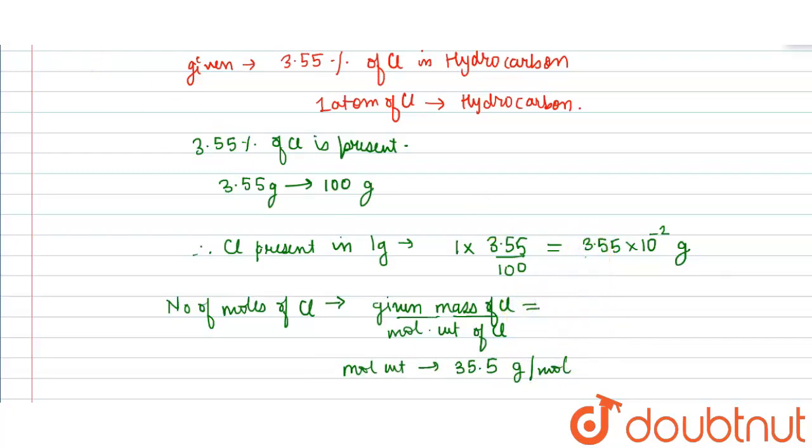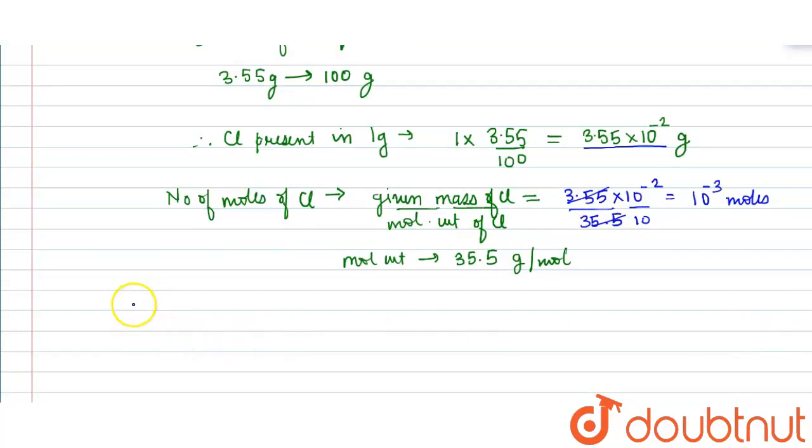This would be equals to the mass, which is 3.55 × 10^-2 ÷ 35.5. This gives us 10^-3 moles. Therefore, we have found that number of moles equals 10^-3.